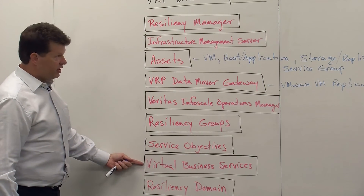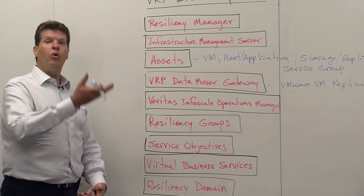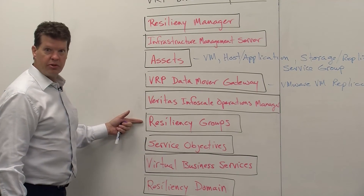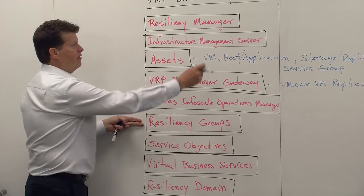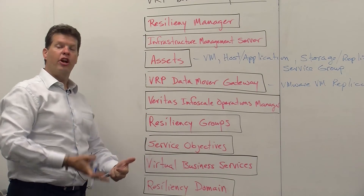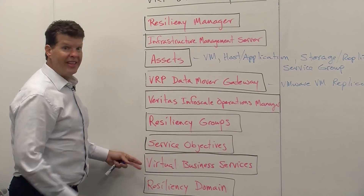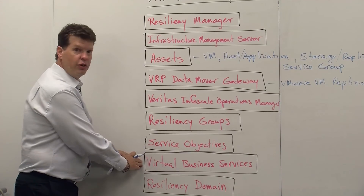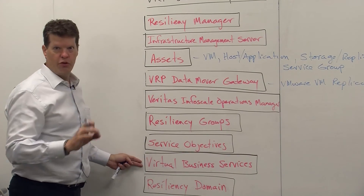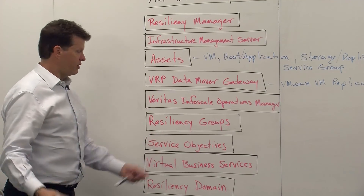Virtual business services is the ability to define startup order and shutdown order for resiliency groups. If we have certain assets that need to start up before others, we put them in a virtual business service. This is not to be confused with VCS and VOM virtual business services — they do basically the same thing, but in two different environments.